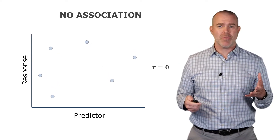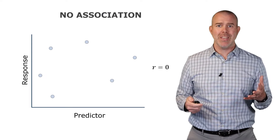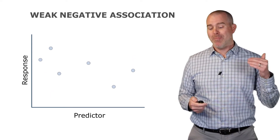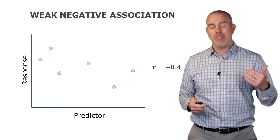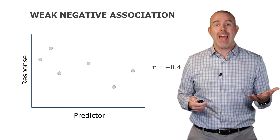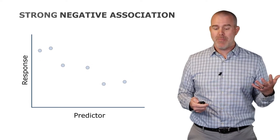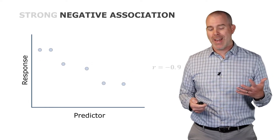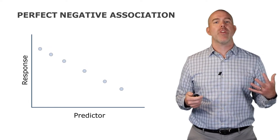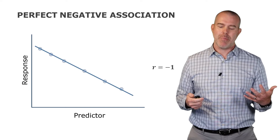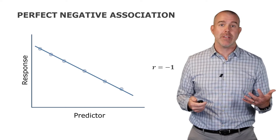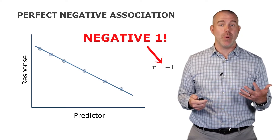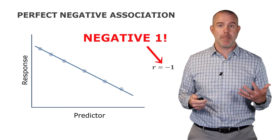No relationship here at all. And then if we become negative, it can become a weak negative, maybe a strong negative — negative 0.9. And then, this very rare, almost impossible, perfect negative relationship — that's R equals negative 1.